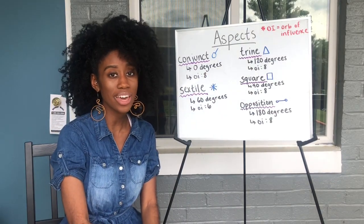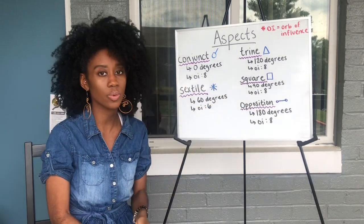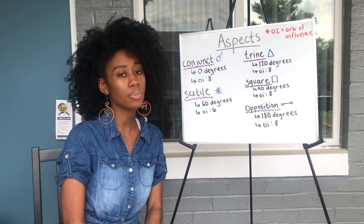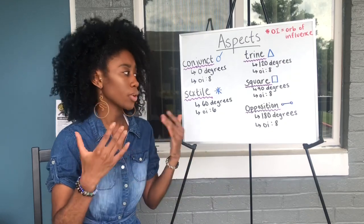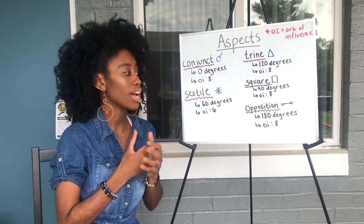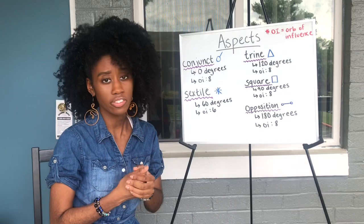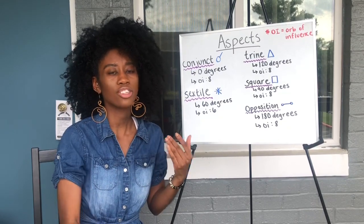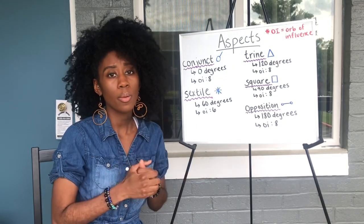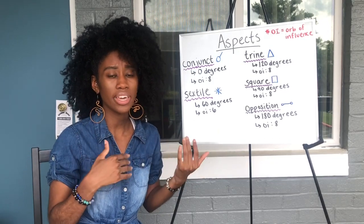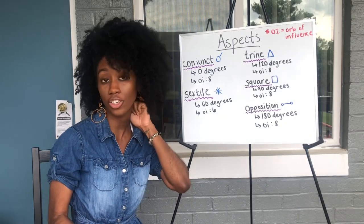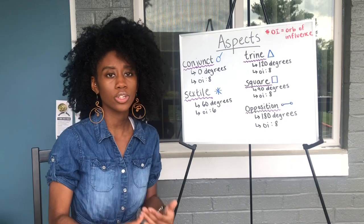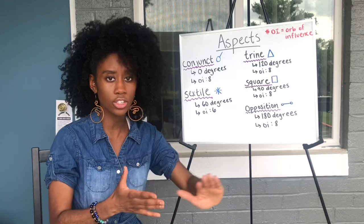Now we're getting into the struggle aspects. Square aspects are 90 degrees with an OI of 8, meaning anywhere between 82 degrees and 98 degrees. Square aspects are typically very difficult. When you look at your chart and notice a whole bunch of squares, that's normal — it's rare to see a chart with no squares at all. I look at squares as karmic imprints: lessons you're born into this world meaning to learn. Some squares are easier than others, but the quicker you learn the lessons those squares are trying to teach you, the easier you can make the remainder of your life.